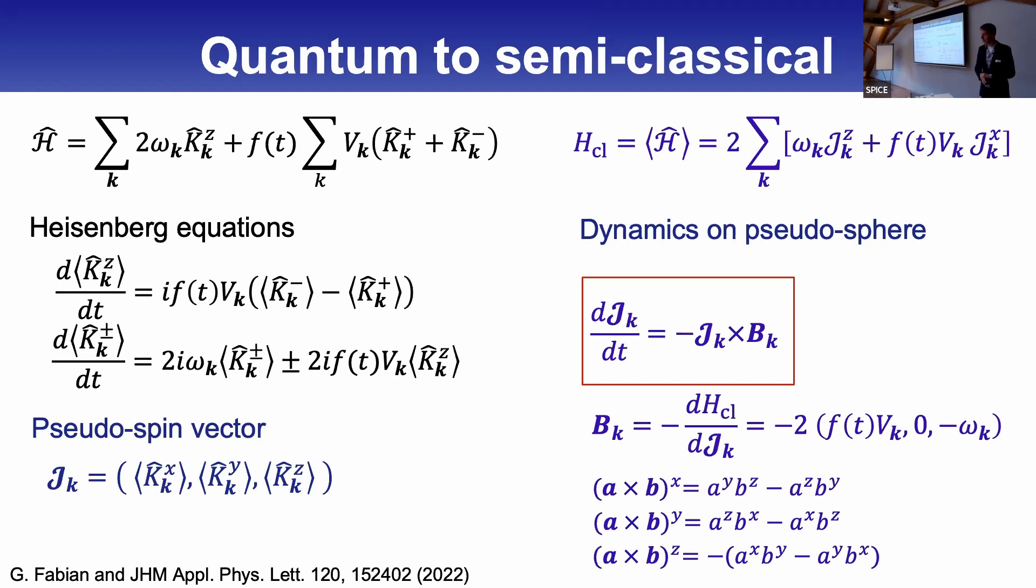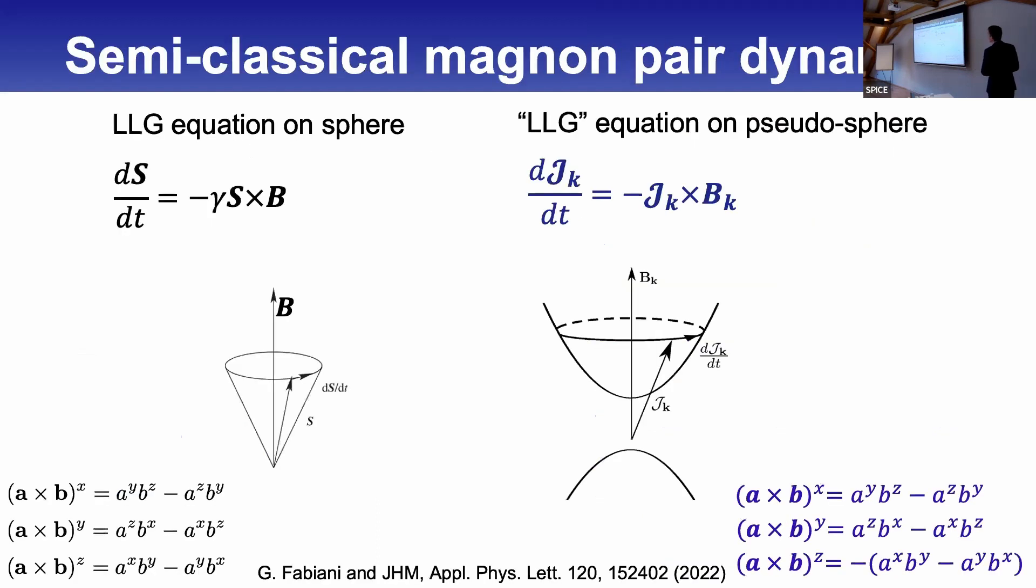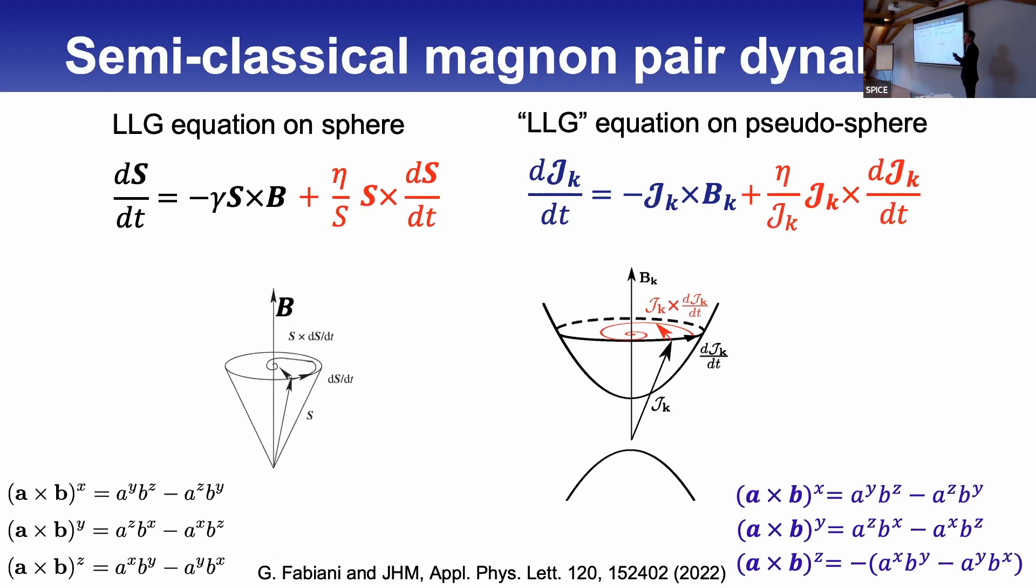Now how can we build some semi-classical theory? We do it in the same spirit as the previous talk—we look at the dynamics in the Heisenberg representation. The dynamics is given by the operators. We can take the effective classical Hamiltonian and rewrite this as dynamics on a pseudo-sphere. It's precessional dynamics like magnetization rotation, but now for the pseudo-spin. Because of this different geometry on this pseudo-sphere which is not bounded, we realize there is some new effect: parametric excitation.